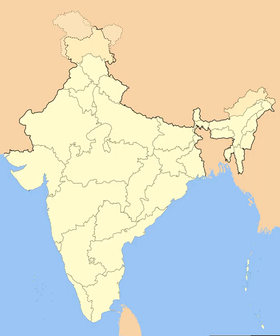India is a federal union comprising 29 states and 7 union territories, for a total of 36 entities. The states and union territories are further subdivided into districts and smaller administrative divisions.